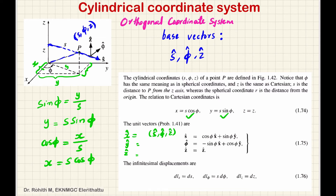Inverting this is a problem left as an assignment item. The matrix formula is easy to apply here. The matrix is inverted and then multiplied — that is the hint for the assignment.